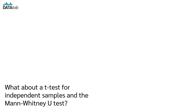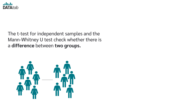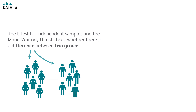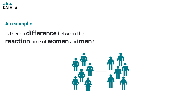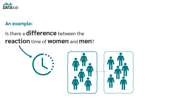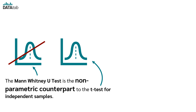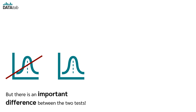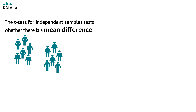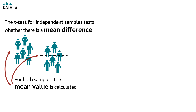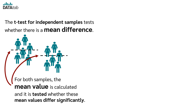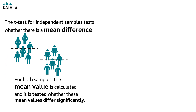What about a t-test for independent samples and the Mann-Whitney-U test? Both tests check whether there is a difference between two groups. The Mann-Whitney-U test is the nonparametric counterpart to the t-test for independent samples, but there is an important difference: the t-test for independent samples tests whether there is a mean difference — the mean value is calculated for both samples and it is tested whether these mean values differ significantly.